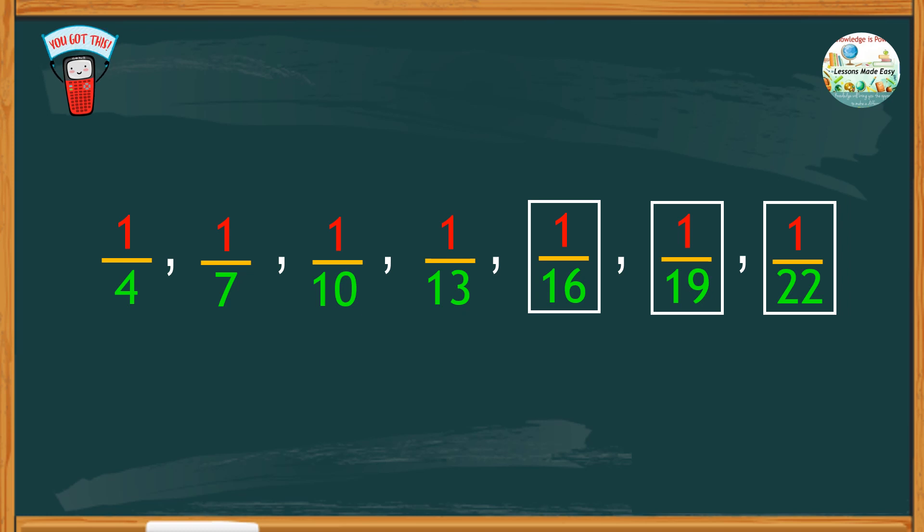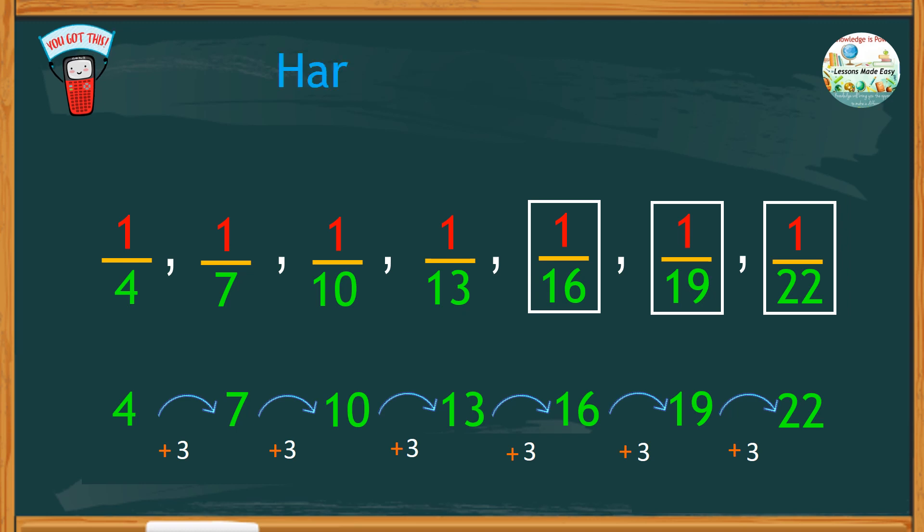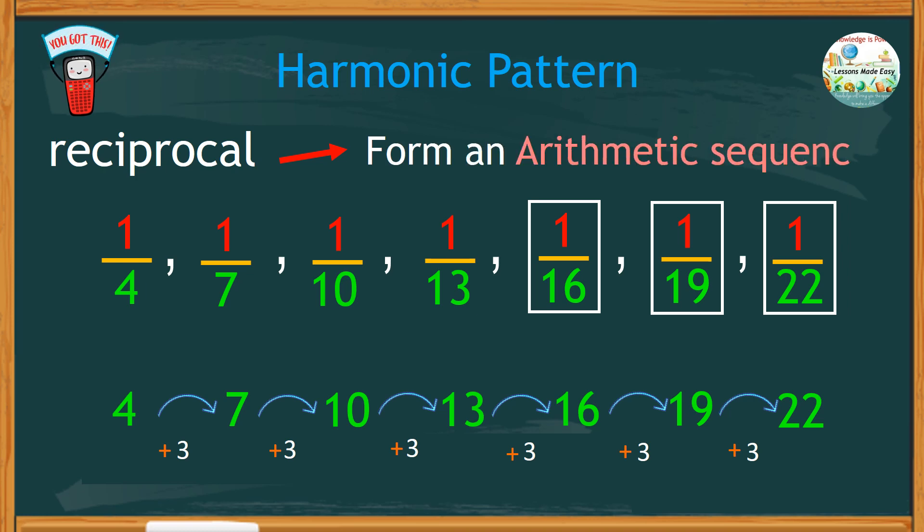What have you observed in this type of pattern? See what happens if we take the reciprocal of these elements. Notice that the reciprocal has a common difference of 3, and it ascends by adding the common difference, forming an arithmetic sequence. This type of pattern is called a harmonic pattern, where the reciprocals of all the elements form an arithmetic sequence.